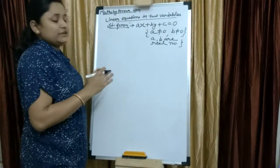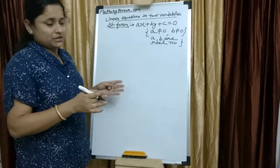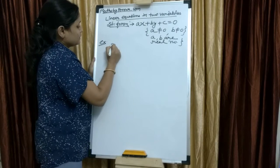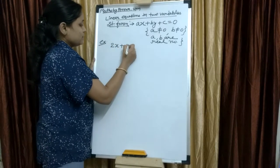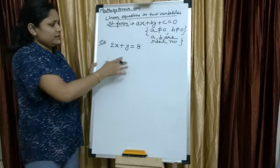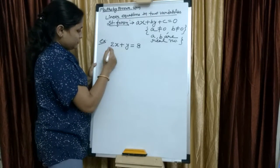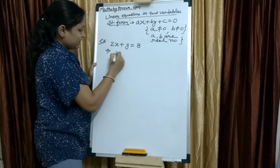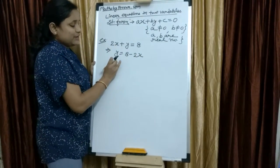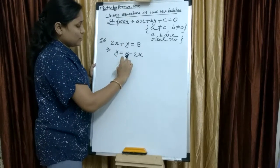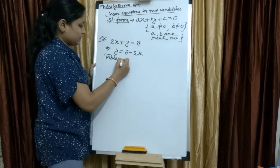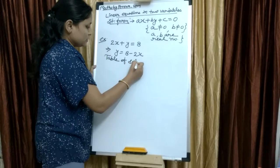Now, if you have to draw a graph of a linear equation, we take an example: 2x plus y equals to 8. Here, you have to draw a graph. First, y equals to 8 minus 2x. Means you have to keep one variable on LHS and take the other variable to the RHS. Now, Table of Solutions.